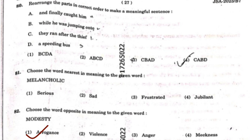Question 80: Rearrange the parts in the correct order to make a meaningful sentence. The correct answer is option 4: CABD. Reading CABD gives the meaningful sentence: 'They ran after the thief and finally caught him while he was jumping into a speeding bus.' A tip for rearrangement questions in future exams: go by the options, see which option starts a sensible sentence, then read through the full option and mark the one that makes the most appropriate sentence.